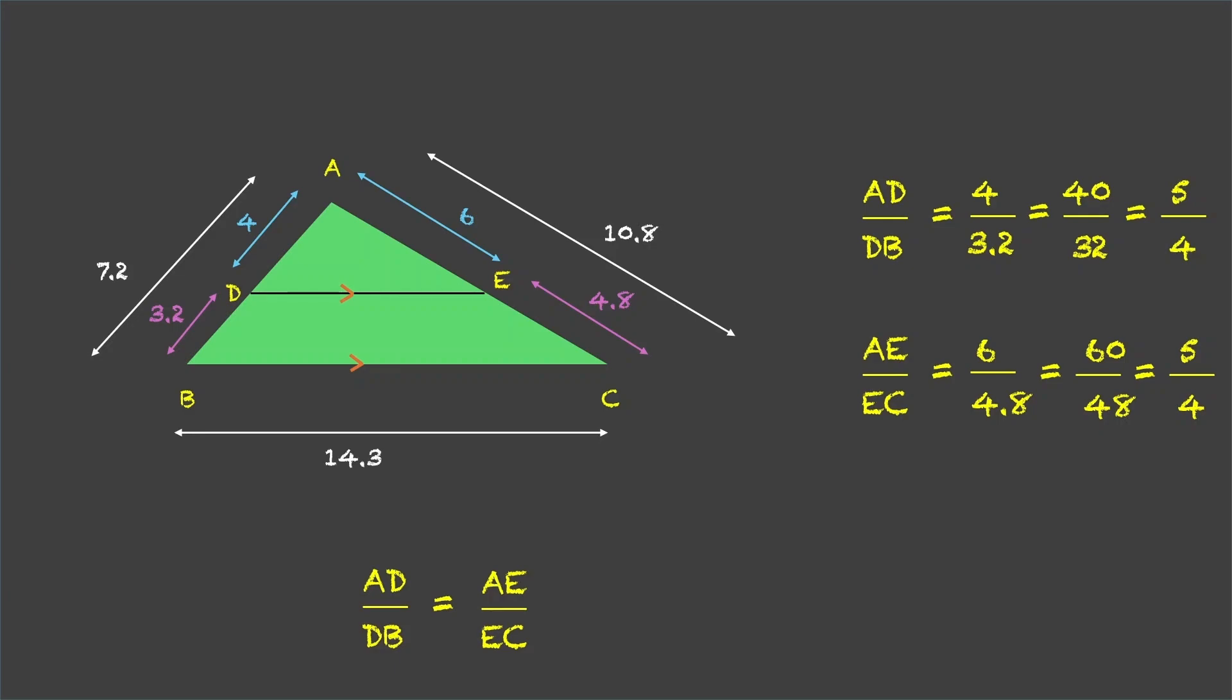Now, it cannot be really a coincidence every time, right? So, we will find that if we draw a line parallel to any one side of the triangle, such that it intersects the other two sides, then it divides those two sides in the same ratio. And it is true for every triangle.